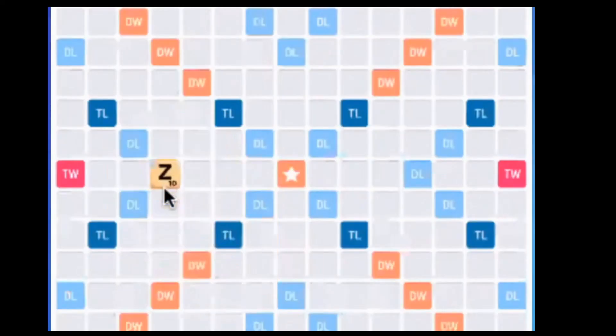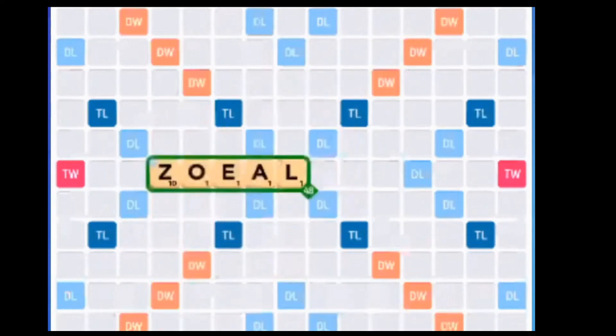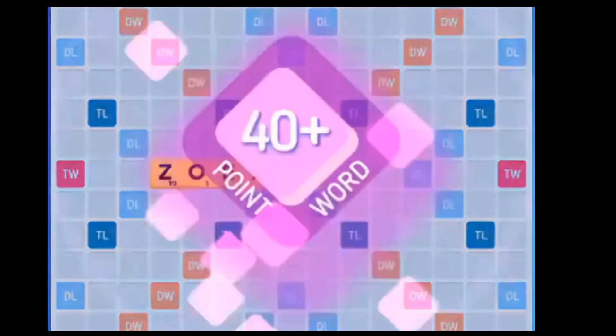Make sure that when you use the Z, you play it in conjunction with a bonus square, either by placing the Z on a double or triple letter score or by placing your full Z word on a double or triple word score.